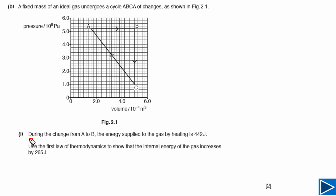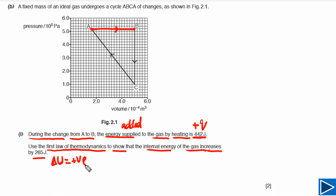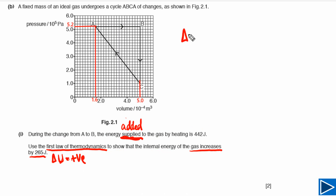For part B1, the question tells us that during the change from A to B, the amount of energy supplied to the gas by heating is 442 J. Since this energy is supplied, it means energy has been added to the system, so this is plus Q. The question asks us to use the first law of thermodynamics to show that the internal energy increases by 265 J. Let's write down the equation: delta U equals Q plus W.